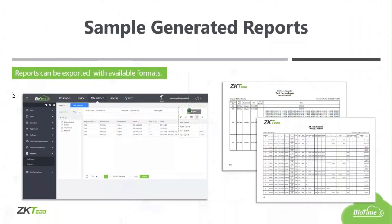Next is geo-fencing mobile punches. You can create a geographic boundary to restrict mobile application punches and define the clock-in boundaries on Biotime Cloud — this is to avoid fake attendance from employees. Next is sample-generated reports — reports can simply be exported with available formats including PDF, Excel, CSV, or text.